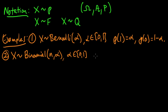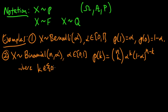And this has PMF P of k is n choose k times alpha to the k times 1 minus alpha to the n minus k, where k is in the set 0, 1, 2, 3, etc., up to n.